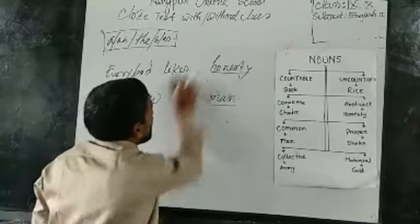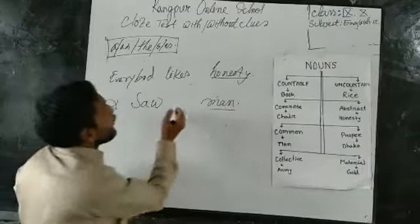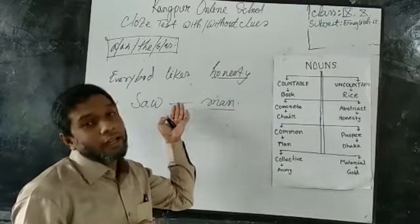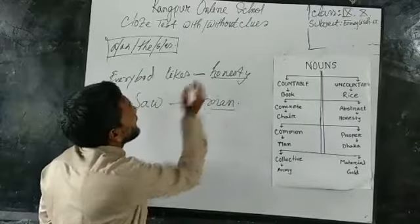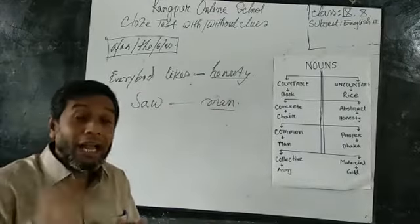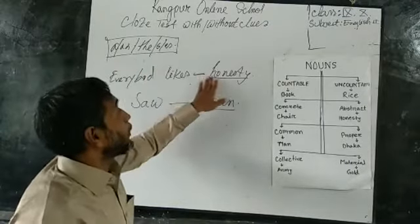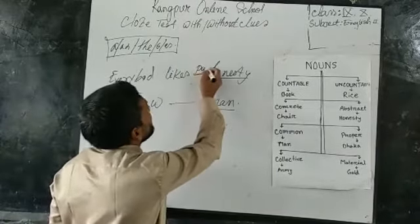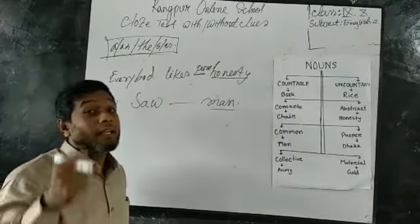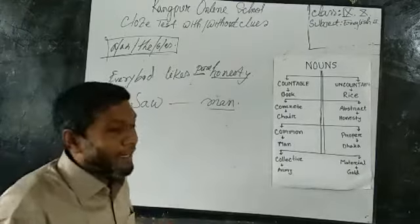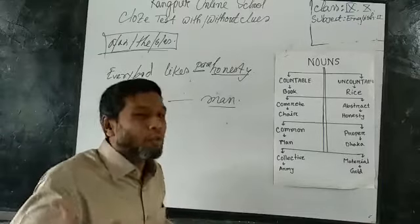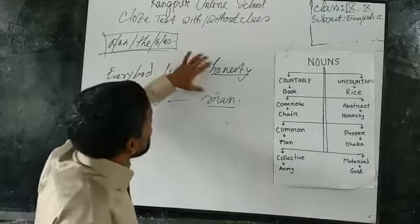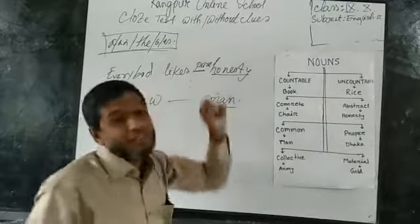So dear students, what was our technique, what is our focus point? When in a question paper I see a gap, I can understand: if it's a singular common noun, I must use 'a' or 'an'. But if the noun belongs to the second group — uncountable, abstract, proper, material — I cannot use 'a', 'an', 's', or 'es' before it. Then I may use an adjective instead. These are the techniques. I am repeating: our focus point is to identify techniques to fill in the blanks very successfully.